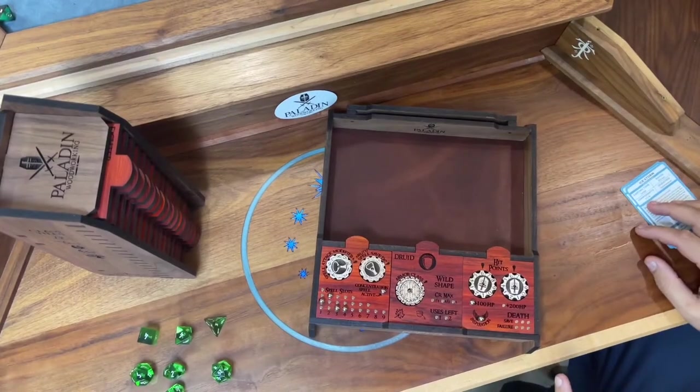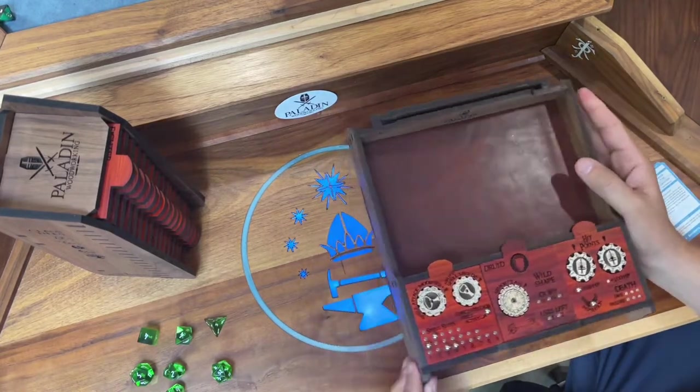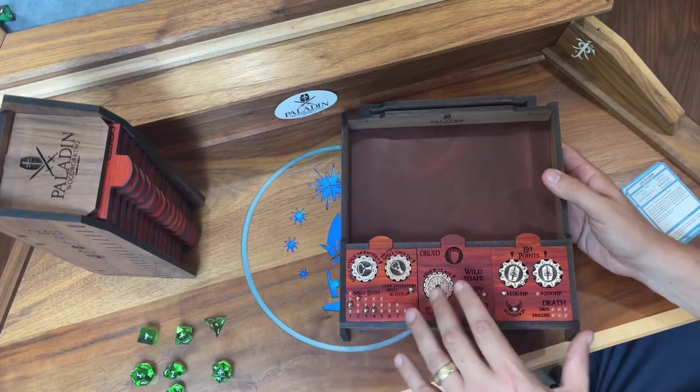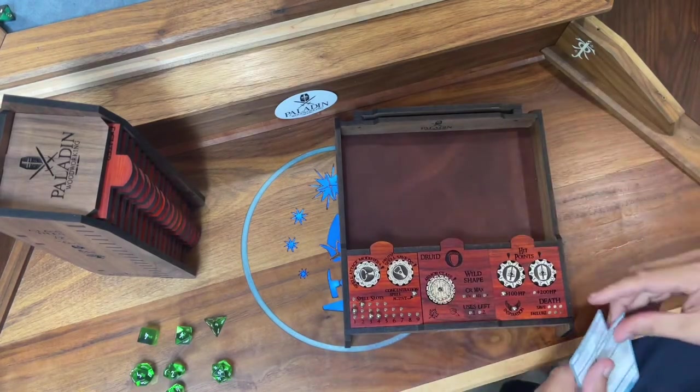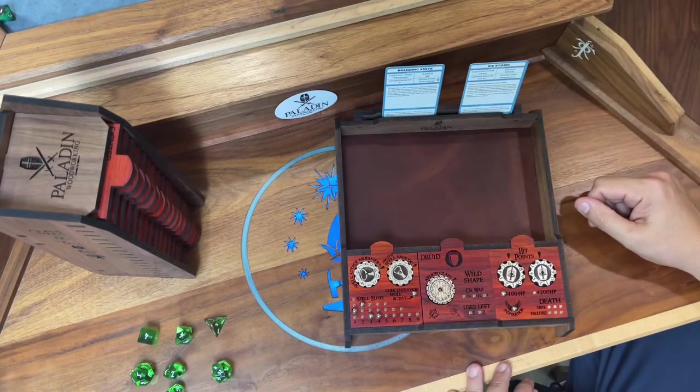A quick overview of the new Masterwork Adventurer's Kit from Paladin Woodworking. This is the full system that has the storage, class tracking features, rolling tray, and card holder at the top.